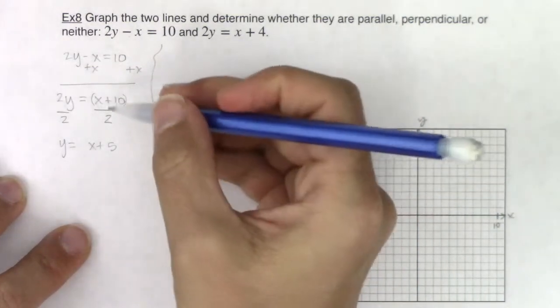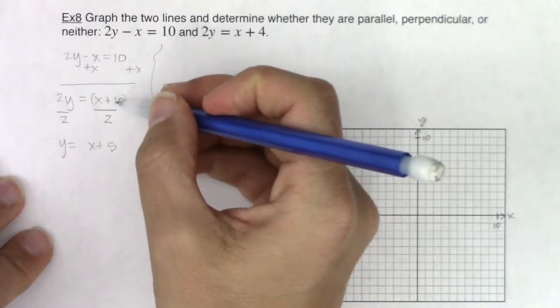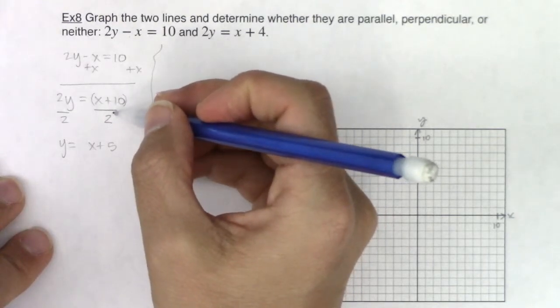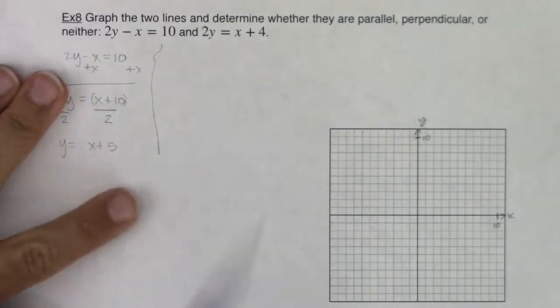You have to remember there's parentheses around this numerator, right? That those fractions, those binomials in the fractions are always protected by parentheses. And dividing by 2 is equivalent to multiplying by 1 half.